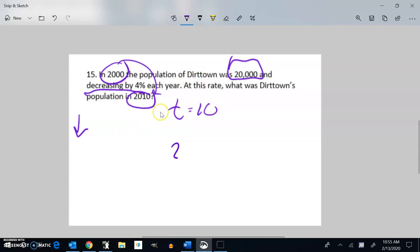My initial population is 20,000. And it's decreasing by 4%. So if it was staying the same, it would be just 100% of what it was. But it's decreasing by 4%, so I want to subtract 4%.